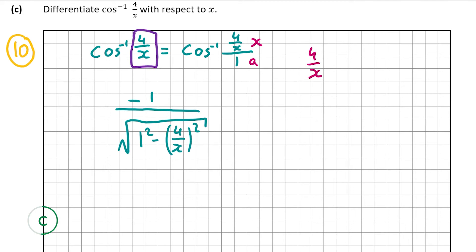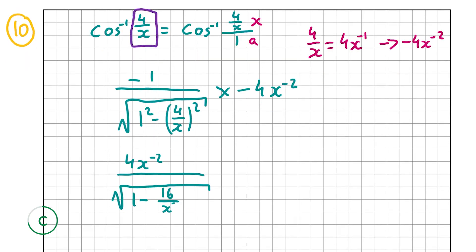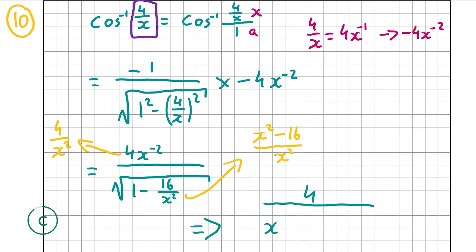Since 4 over x equals 4x to the power of minus 1, differentiating gives minus 4x to the power of minus 2. So we multiply by minus 4x to the power of minus 2, giving 4x to the power of minus 2 over the square root of 1 minus 16 over x squared. We write 4x to the power of minus 2 as 4 over x squared, and 1 minus 16 over x squared as (x squared minus 16) over x squared, leaving us with 4 over x squared times the square root of (x squared minus 16) over x squared.